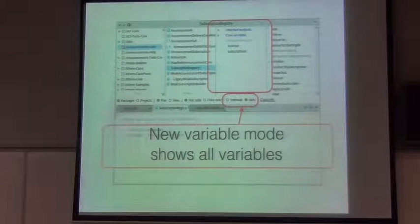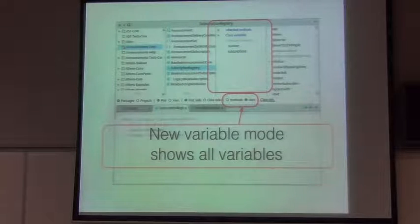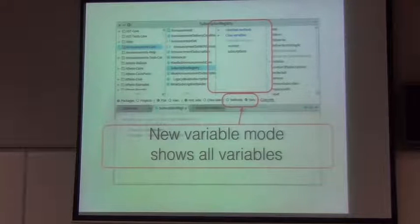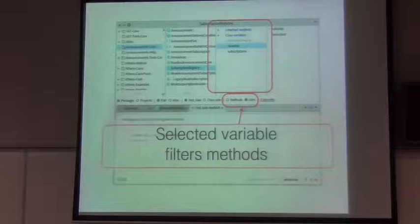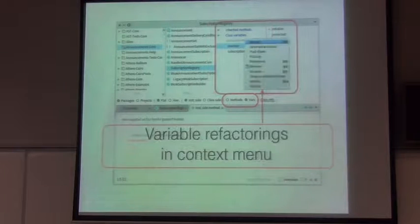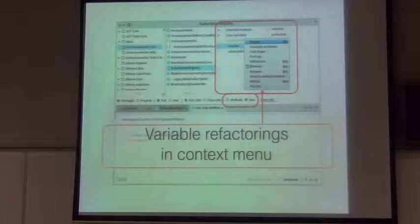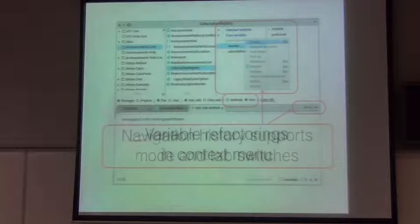In Calypso there is a new mode of the method protocol view that allows you to see all variables accessible from the class. When you select a variable, it shows which methods use it, and you are able to refactor variables directly from the context menu of the variable.